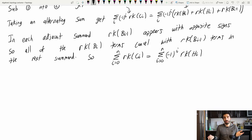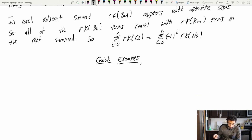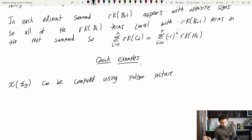So let me show you this in action. It's very easy to compute the number of cells in a thing. So here are some quick examples. The Euler characteristic of sigma g can be computed using this fundamental polygon.